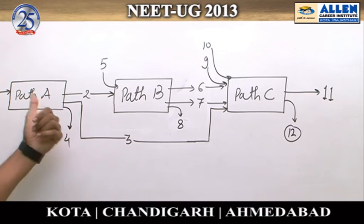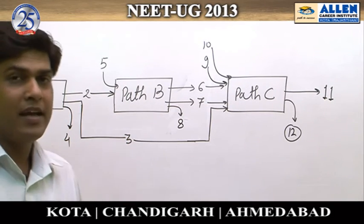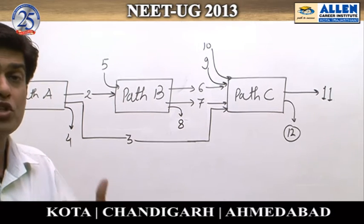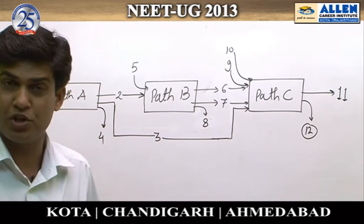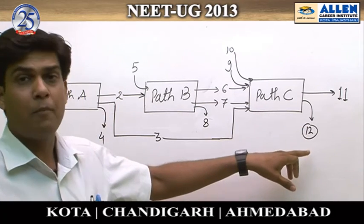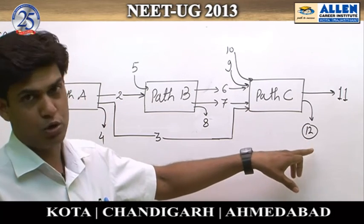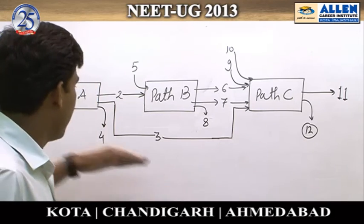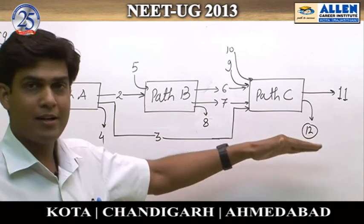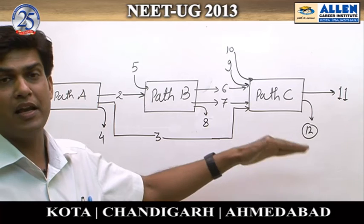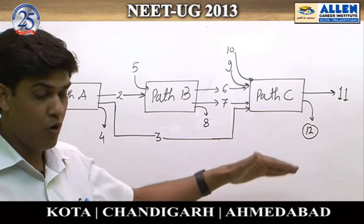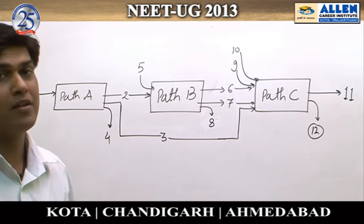Numbers six and seven go through path C, and product number three from glycolysis also takes part in path C, simply indicating that path C is oxidative phosphorylation or terminal oxidation. Ultimately, we get one more product, number twelve, which is also ATP. So numbers four, eight, and twelve all represent the net ATP output of these three pathways. The answer to the given question would be option three.